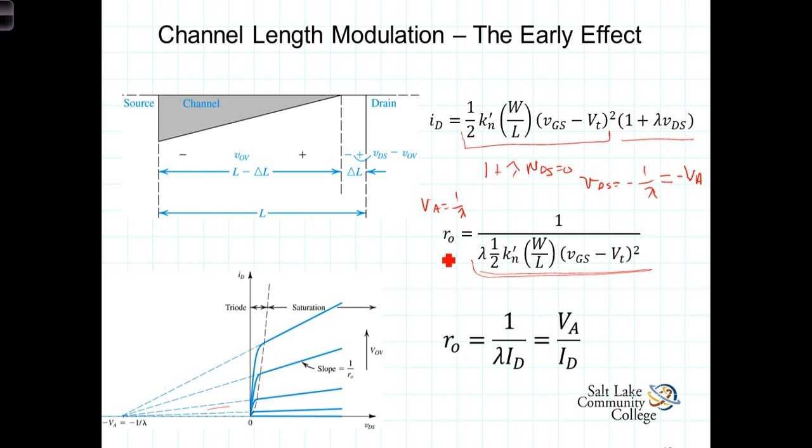Thus, the resistance, we're going to refer to that as the effective output resistance of the field effect transistor, is simply equal to 1 over this expression. You'll notice that it's a function of VGS, and it also depends upon this device parameter, lambda.